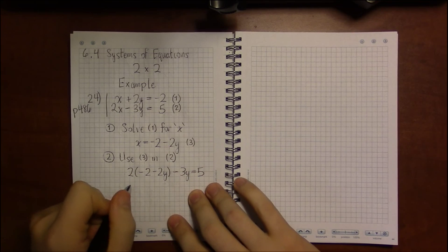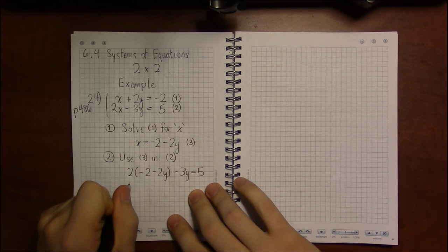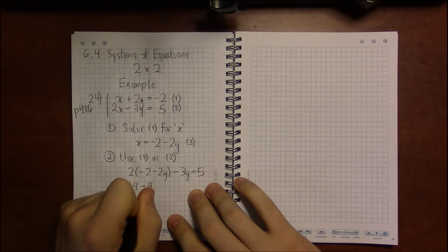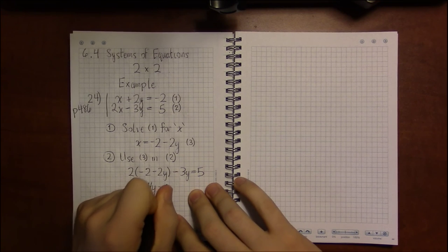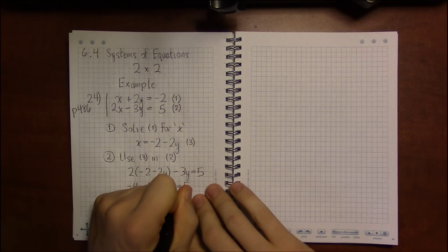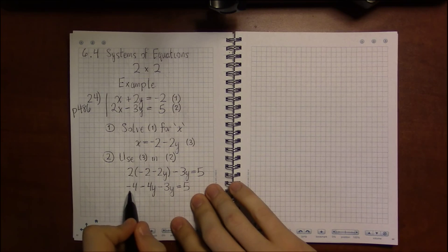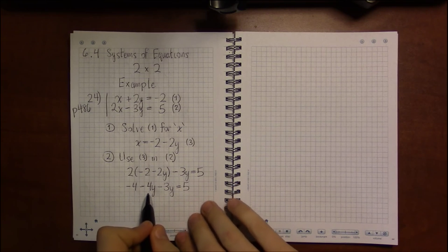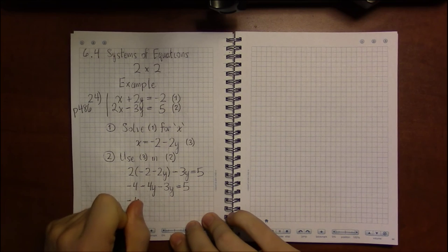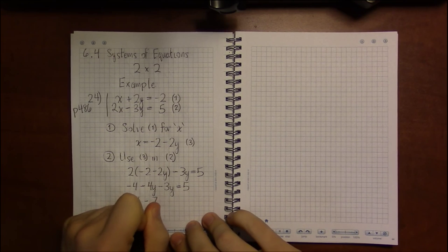We'll simplify by distributing the 2 first to get minus 4 minus 4y minus 3y equals 5. Now on the left we should be able to combine minus 4y and minus 3y to get minus 7y.